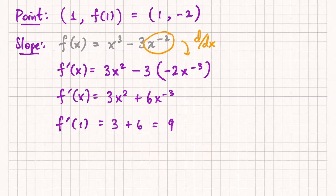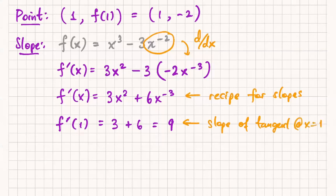So the slope of the line is 9. That's it. It has to be a number. So this is recipe for slopes. Slope of tangent at x equals 1.